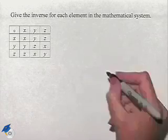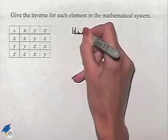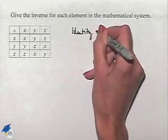In the previous problem, we found out that the identity element for this mathematical system is equal to x.